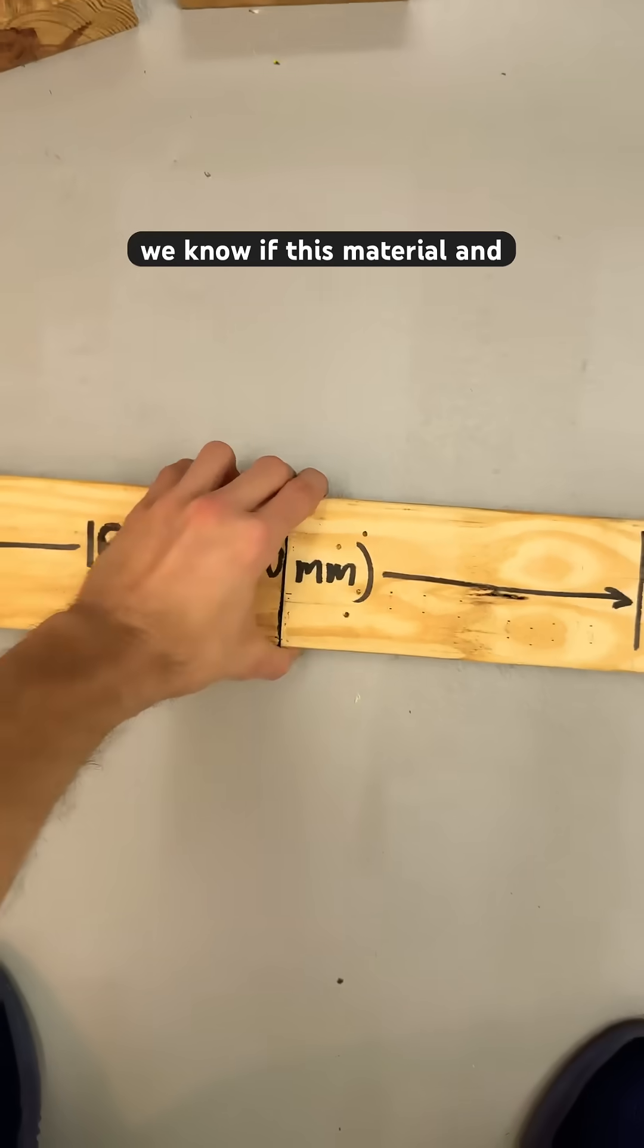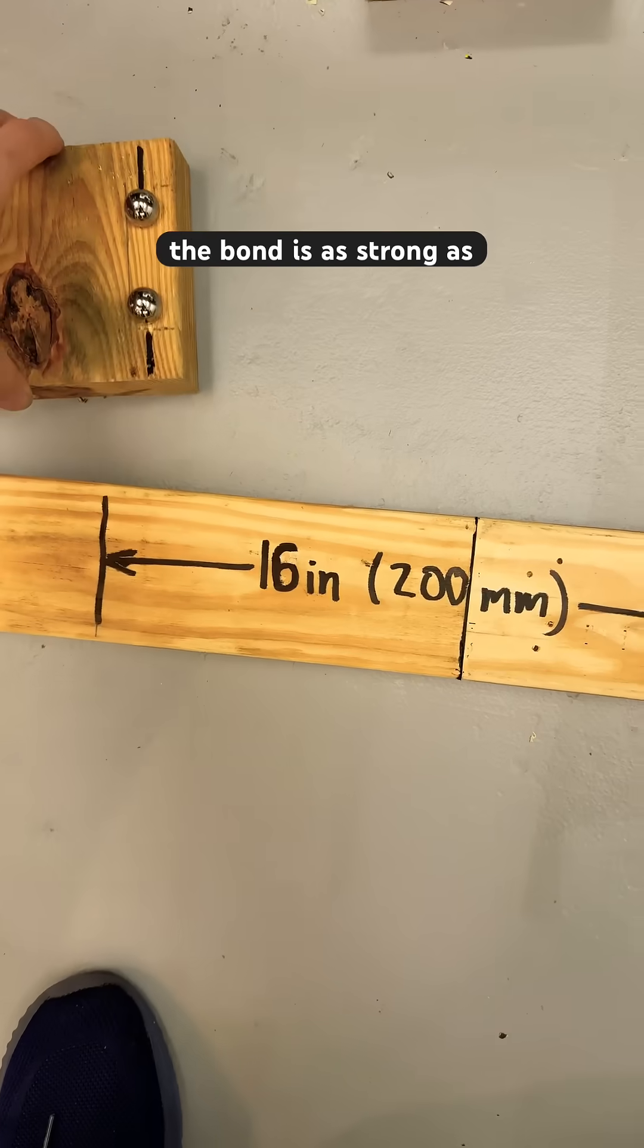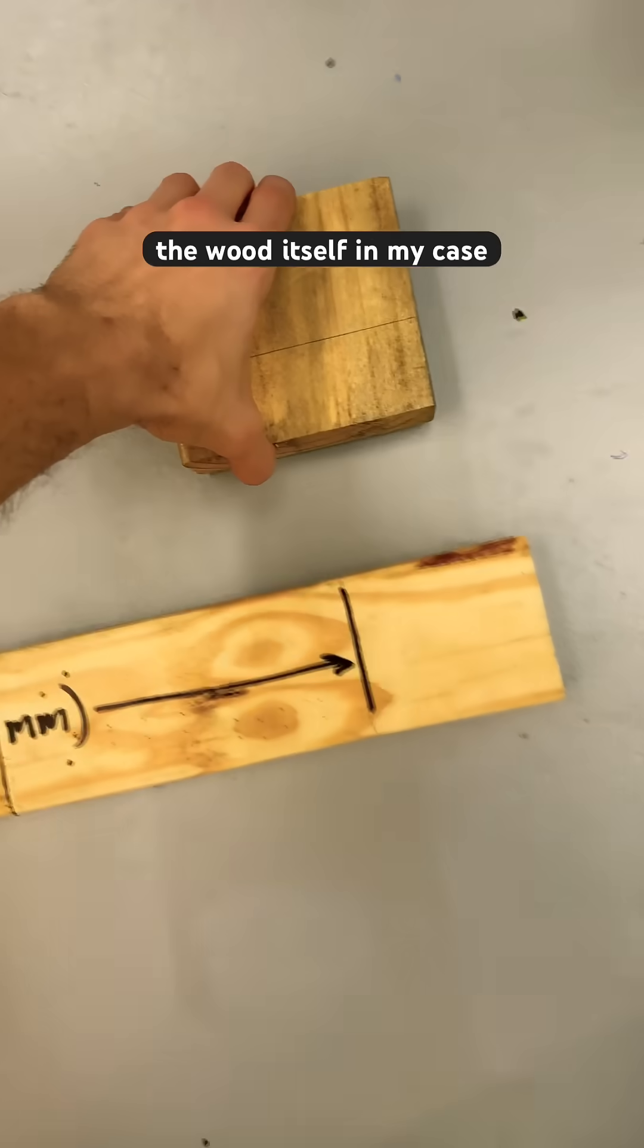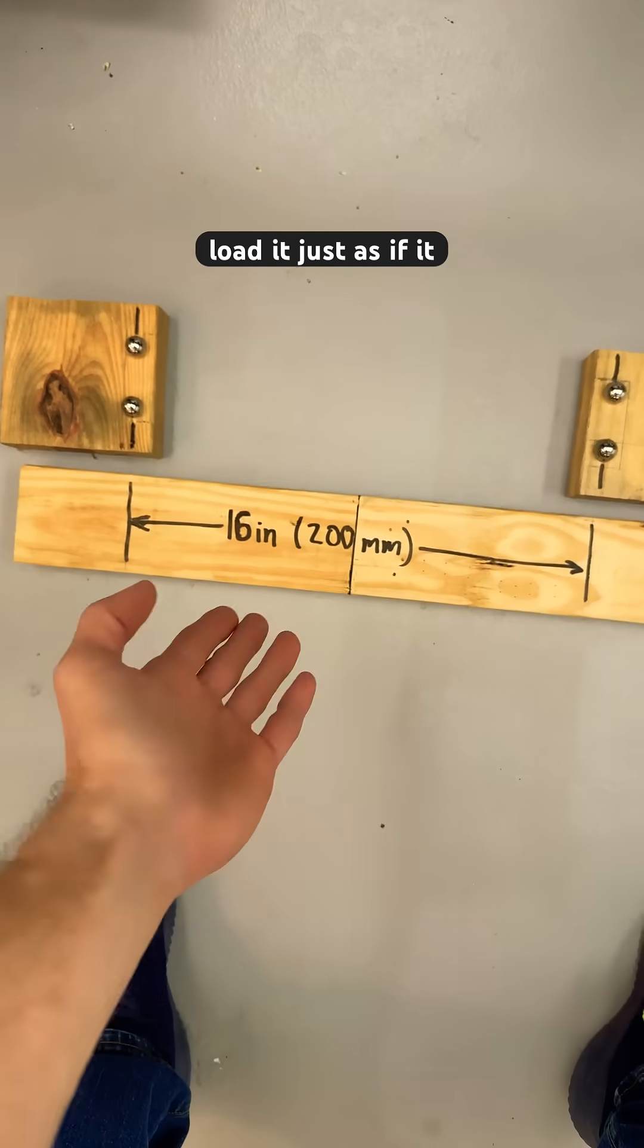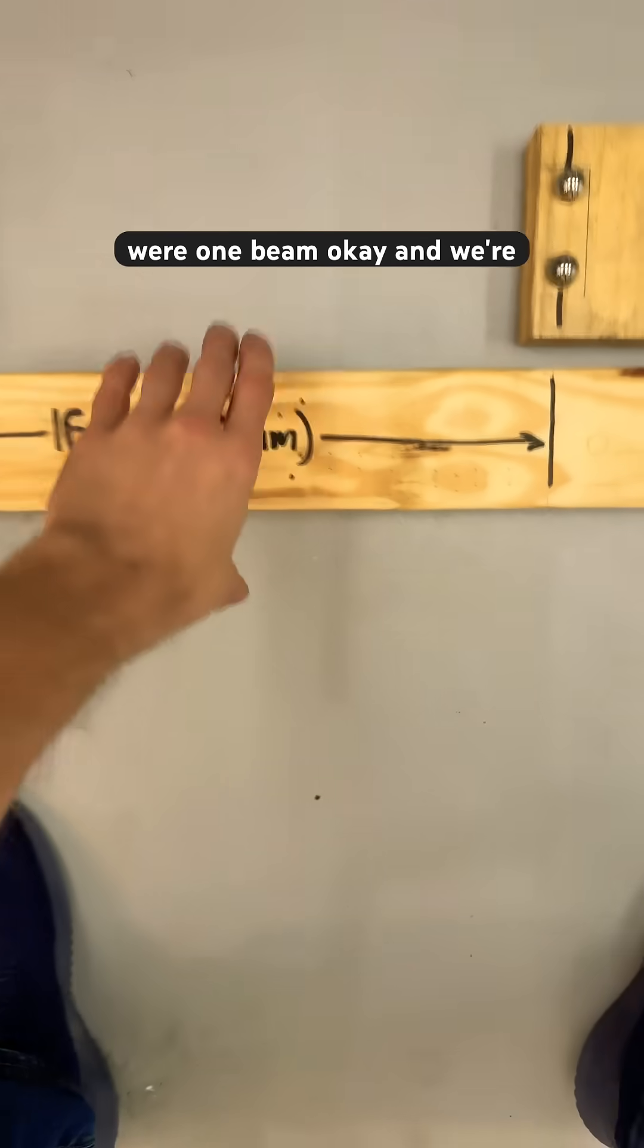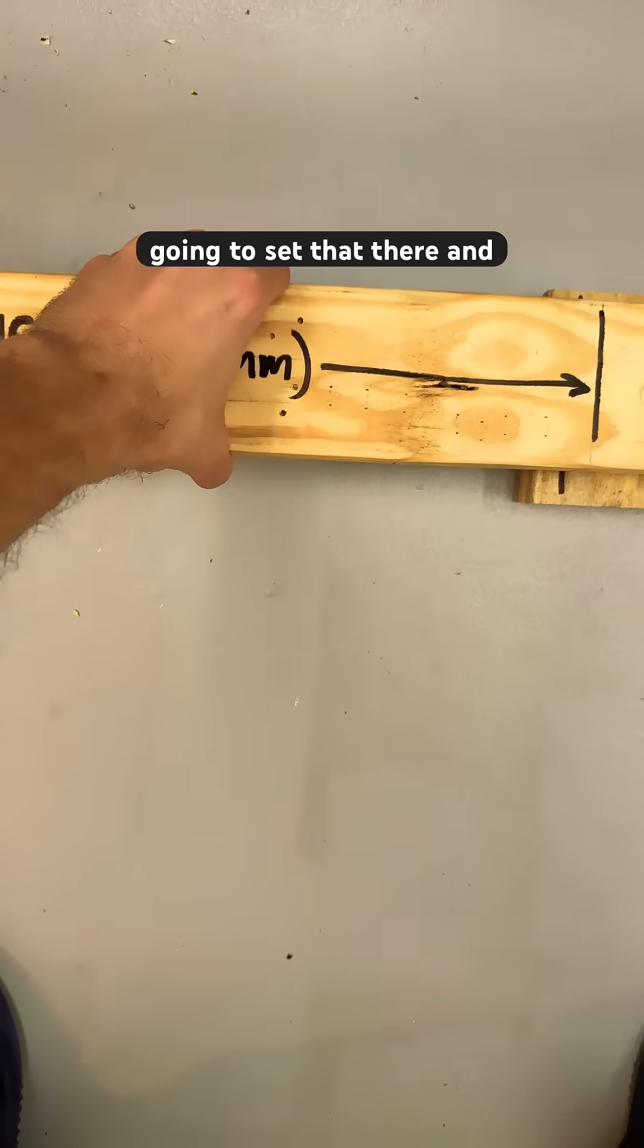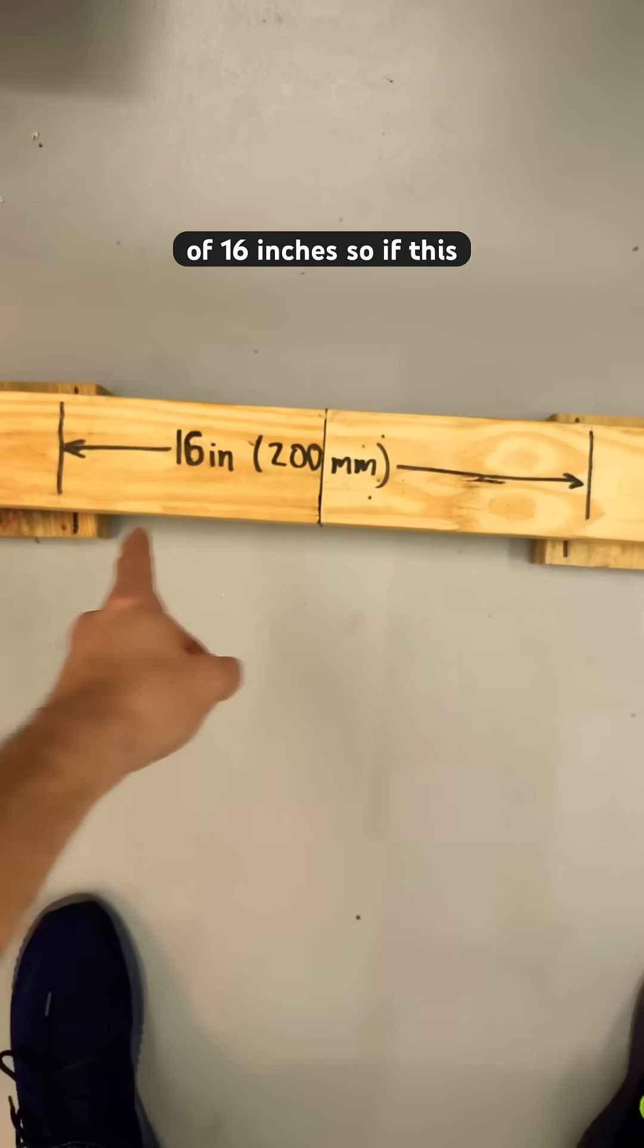So how do we know if this material and the bond is as strong as the wood itself? In my case, I'm going to be able to load it just as if it were one beam. And we're going to set that there, and now we have a distance of 16 inches.